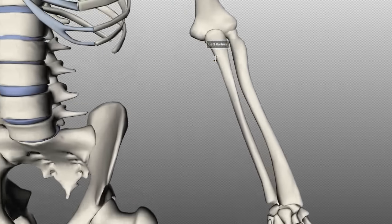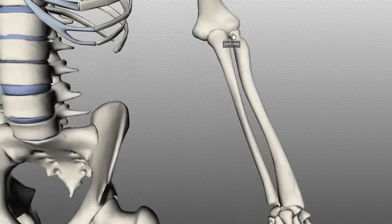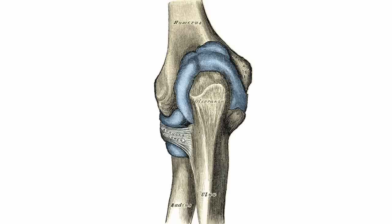At the proximal radio-ulnar joint, there's a ligament called the annular ligament. Looking at a posterior view of the left arm, you can see this annular ligament wrapping around the head of the radius. It stabilizes the joint and allows the radius to rotate against the radial notch on the ulna and against the capitulum of the humerus. It blends with the fibrous membrane of the joint capsule, and it's called 'annular' because annulus in Latin means ring — it forms a ring around the radial head.